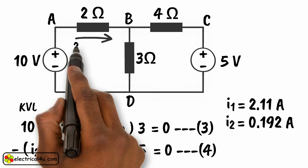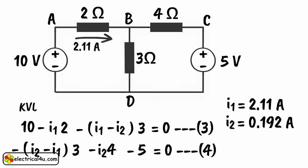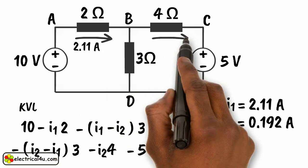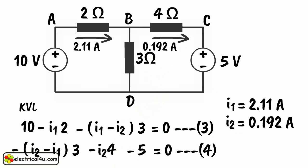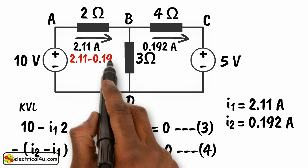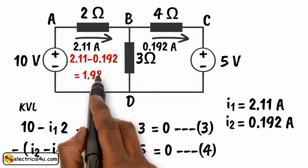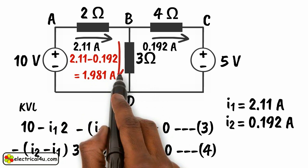So, current through resistance 2 ohms is 2.11 ampere from point A to B. Current through resistance 3 ohms is 2.11 minus 0.192 equals 1.918 ampere from point B to D.